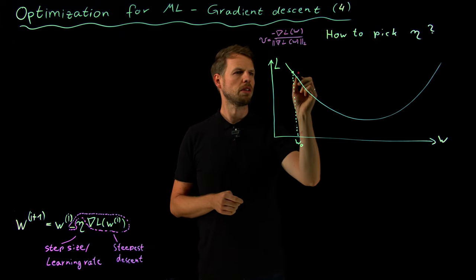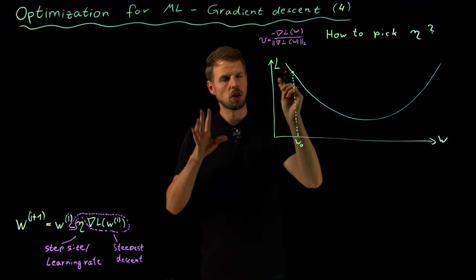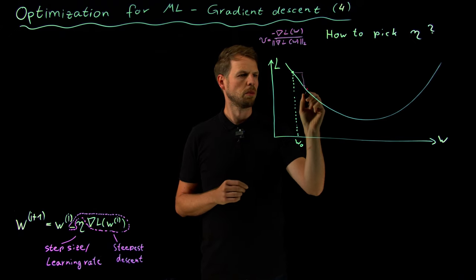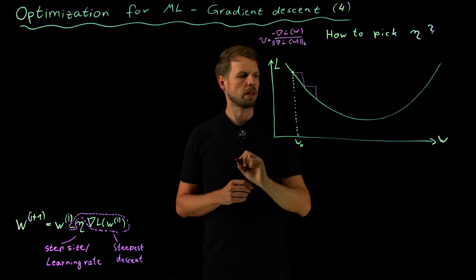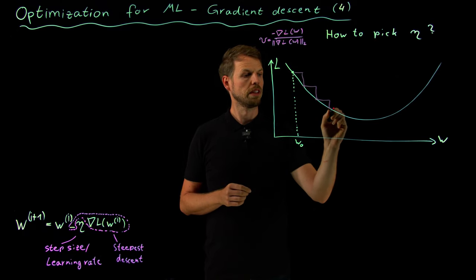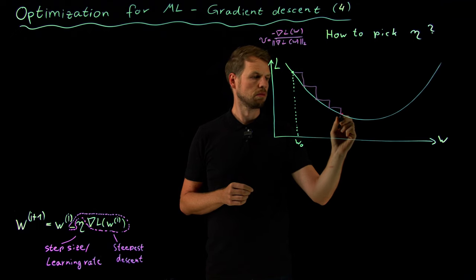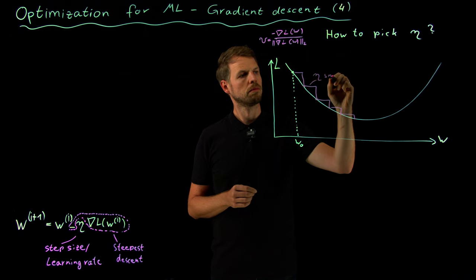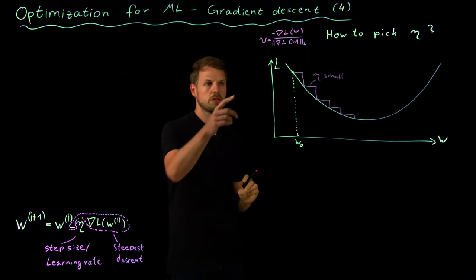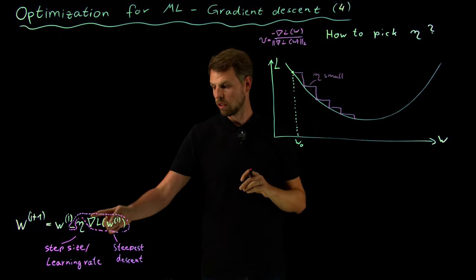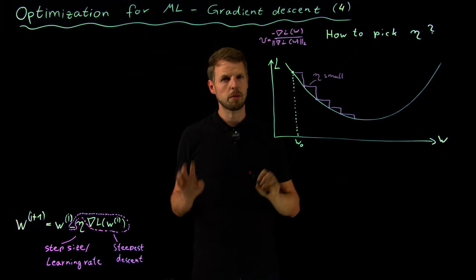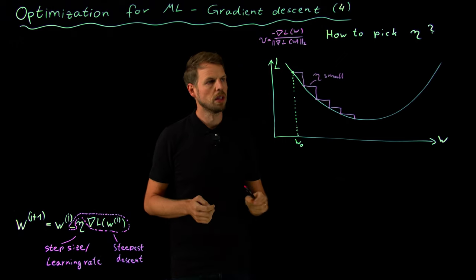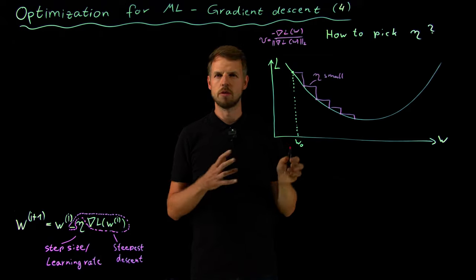Let's try to pick a small step size. If we're cautious, we start here, go like this, end up here, take a next step, and end up here. You can see where this leads — it gives a good way of approaching the minimum but requires quite a few steps. We'll also get back to the question of what we do when gradient evaluation is expensive, and particularly in deep learning, evaluating this gradient is really expensive. So a small eta is maybe not such a favorable situation.